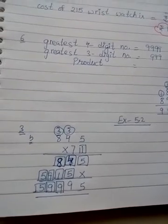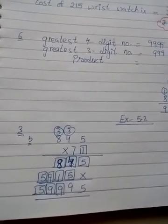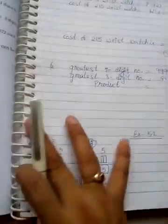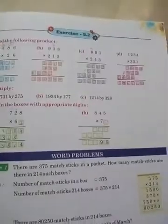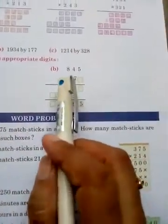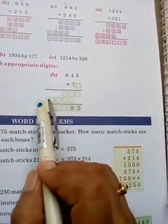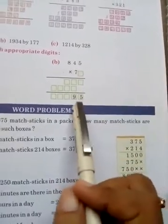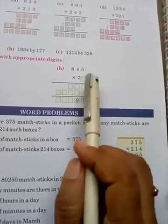As your online class demands, I'll solve a question of fill in the blank with the appropriate digit. This is question number 3, Exercise 5.2, part B. The problem is 845 multiplied by 7 into blanks, and the answer has dashes with 5 and 9 shown.